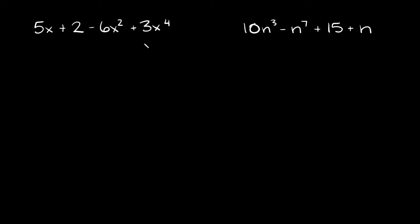Alright, so let's start with this first example right here. So we have 5x plus 2 minus 6x squared plus 3x to the fourth. Alright, so the way you write these in standard form is you basically just order their exponents from greatest or biggest to smallest.